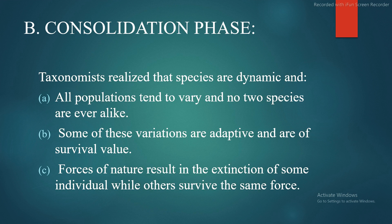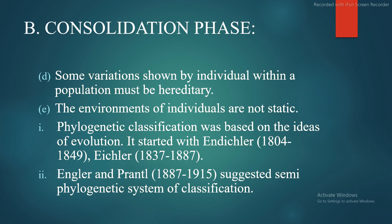The biological species concept defined species as a group of interbreeding populations reproductively isolated from any other such group. Taxonomists realized that species are dynamic, all populations tend to vary, and no two specimens are ever alike. Some variations are adaptive and of survival value; forces of nature result in extinction of some individuals while others survive. Some variations shown by individuals within a population must be hereditary. Phylogenetic classification was based on the ideas of evolution, starting with Endlicher (1804–1849), Eichler (1837–1887), and Engler and Prantl (1887–1915), who suggested a semi-phylogenetic system of classification.